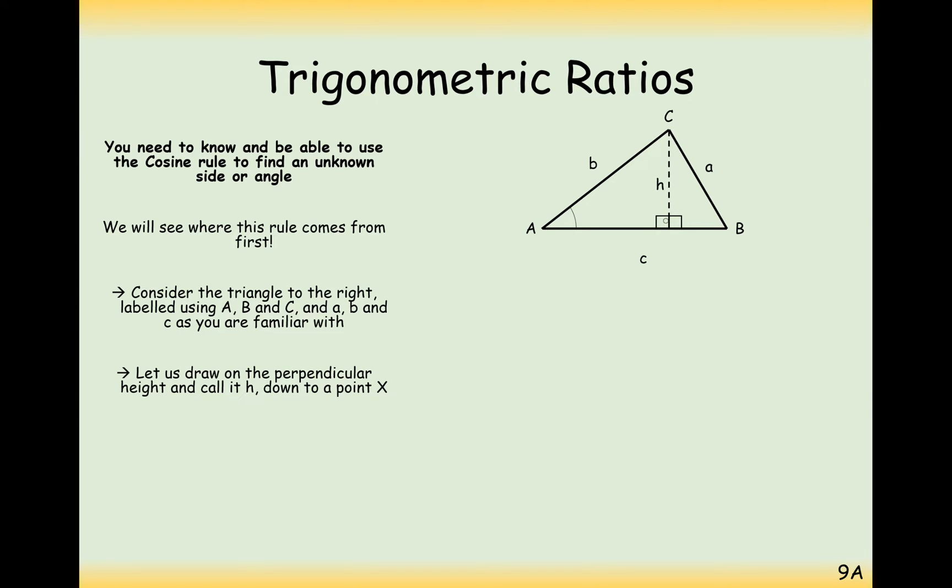So the way we're going to work out how we can link the three sides and an angle together is first by chopping up this triangle here and creating a perpendicular line. So we'll call this X and we'll split the side C into a distance X from here to here and the rest of that side, which will just be called C minus X now.